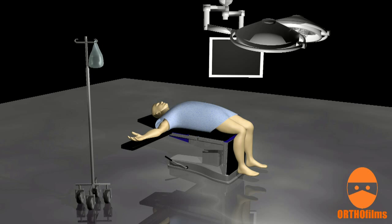ACL reconstruction surgery is usually done arthroscopically. This means that the knee is not cut open to expose the joint. Instead, a camera is inserted into the joint so that the surgeon can visualize the operative site.